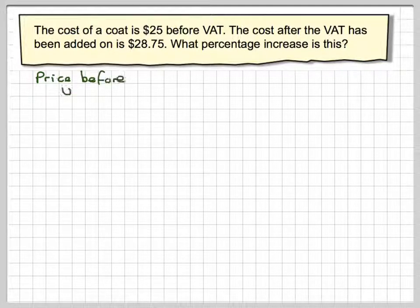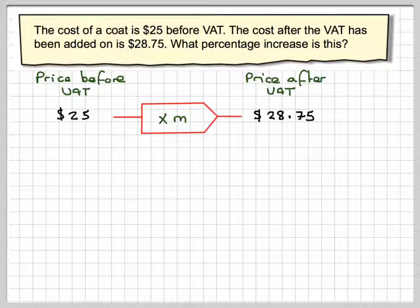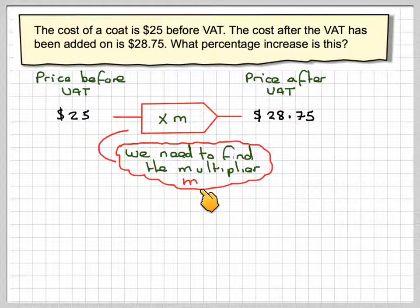So if we write down the price before VAT is $25 and the price after the VAT is $28.75, there is some multiplier that takes me from $25 to $28.75. I'm going to call that multiplier M and the object is that we need to find the multiplier M.